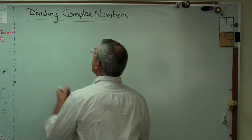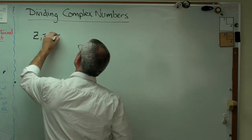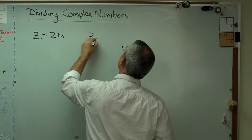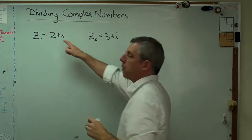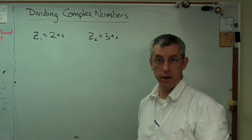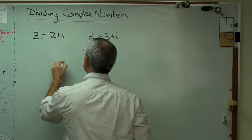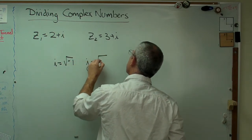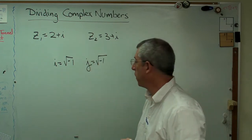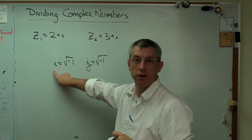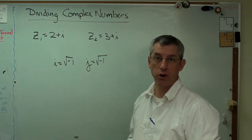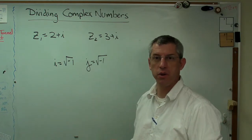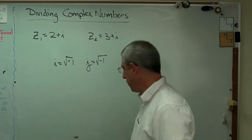If you remember, last time we had z1 equals 2 plus i, and z2 equals 3 plus i. Now remember, i and j are sometimes used interchangeably. Usually you see i as the square root of minus 1. Well, electrical engineers and sometimes a few other people use j equals the square root of minus 1, because in the electrical engineering world, i is usually used to refer to current, and they needed something else. So you can see either i or j. Some books use one, some use the other. Don't worry about it, they're interchangeable.